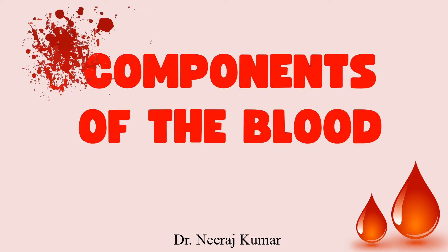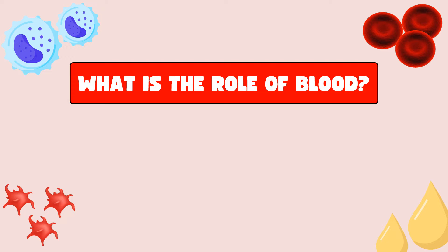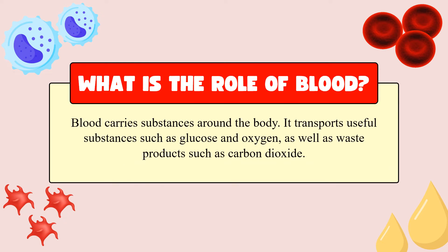Hello everyone, today I will discuss about the components of blood. So without any delay let's start the video. First of all, what is blood and its role? Blood is a red colored fluid present in the human body. Blood is required for the exchange of glucose and gases like oxygen and carbon dioxide, which get exchanged by this blood. So blood is a very important fluid present in the body.